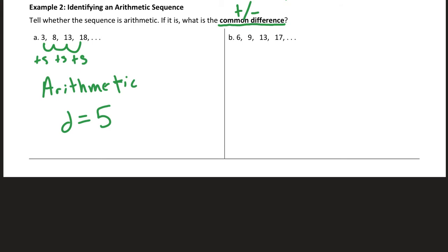In part B, from first term to second term, I add 3, then I add 4, then I add 4 again. So this doesn't have a common difference because I'm not adding or subtracting the same number to get the next term. So this is not arithmetic. That sequence is not arithmetic.